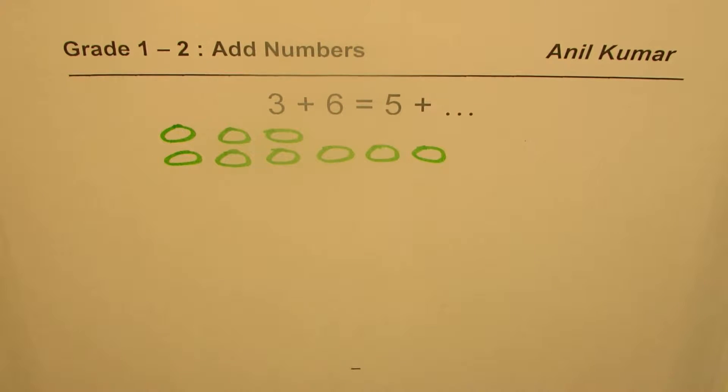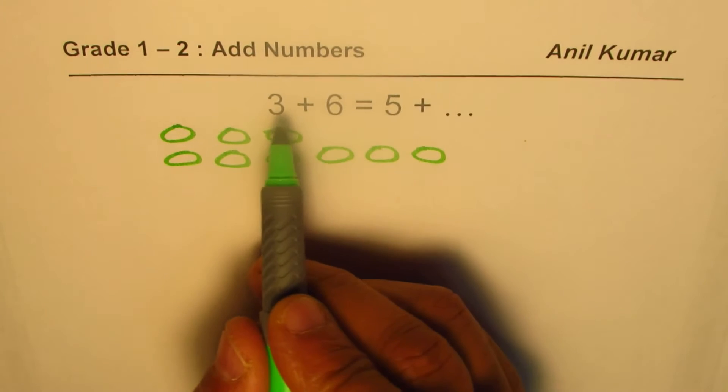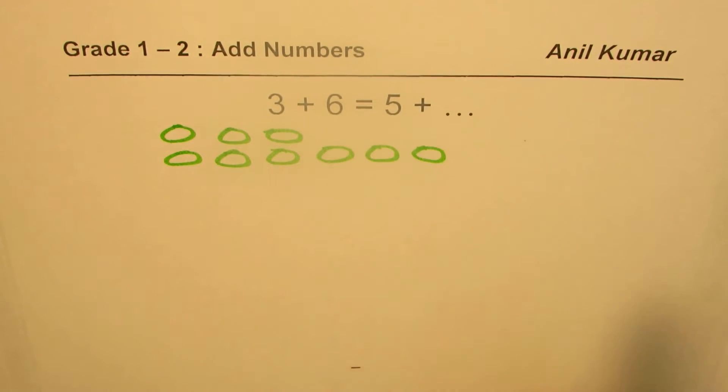We know 3 + 6 is 9, but the question is 3 + 6 equals 5 + how many. How do I do that?